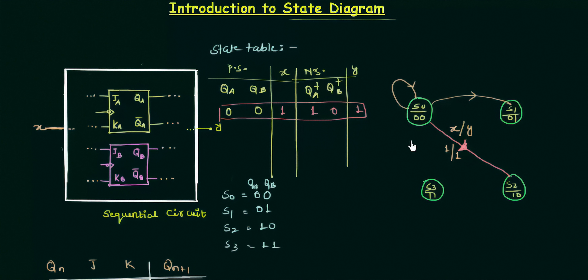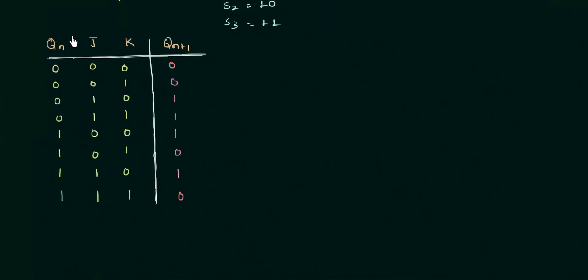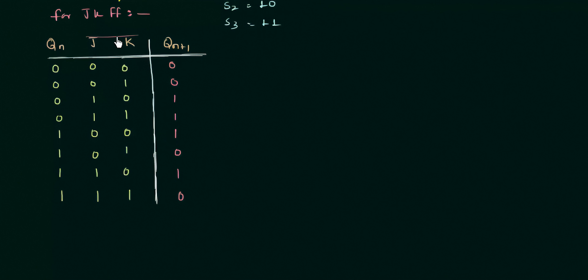The state diagram may look anything depending upon the logic given. Now in this presentation I am going to make the state diagram for a JK flip-flop. This is the characteristic table for the JK flip-flop and I can use this characteristic table as my state table because there is no external input like x or output like y — we just have a JK flip-flop. The inputs are J and K, the present state is Qn, and the next state is Qn+1.